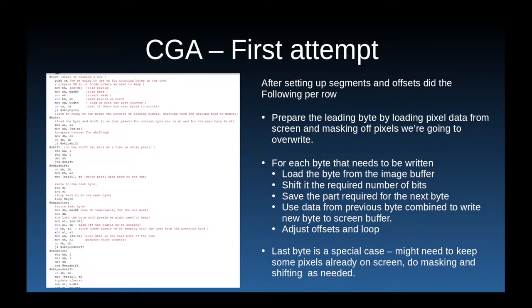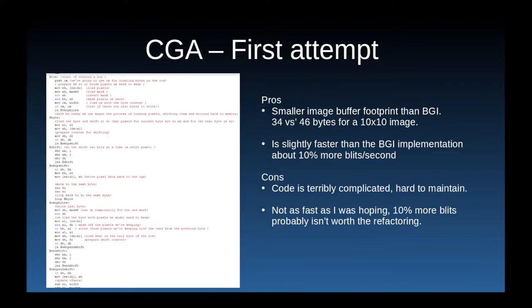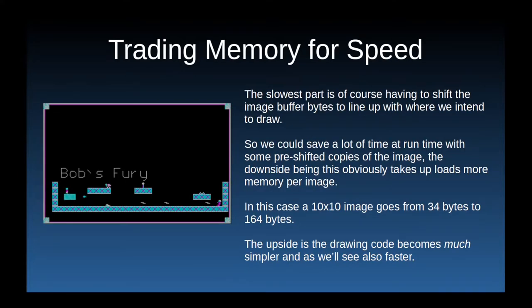My first attempt at writing a blit routine was quite long and complex. The first and last byte of each row require masking to preserve pixels that shouldn't be affected, and every byte from the image buffer needs to be shifted to put it on the correct pixels. I managed to squeeze this in fairly well using registers for the most part. I used less memory per image than the Borland library and achieved a faster result, but I wasn't satisfied with a small speed increase, as this won't make my game much more playable on 8088 hardware.